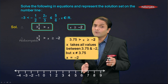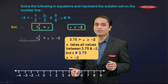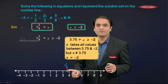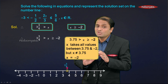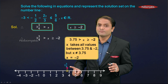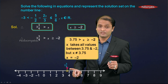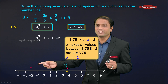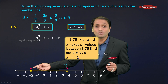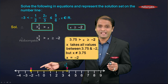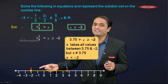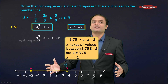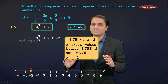The first endpoint is 3.75, which equals 3¾ — a number between 3 and 4, closer to 4. Since this value is not included in the range, mark it with a hollow circle. The second endpoint is −2, which is included, so mark it with a filled circle. All numbers between these two endpoints are part of the solution set on the number line.